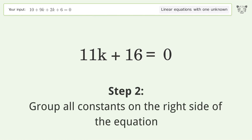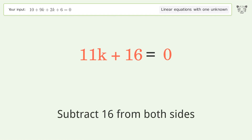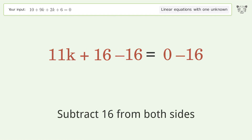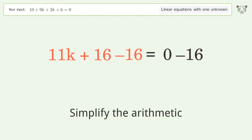Group all constants on the right side of the equation. Subtract 16 from both sides, then simplify the arithmetic.